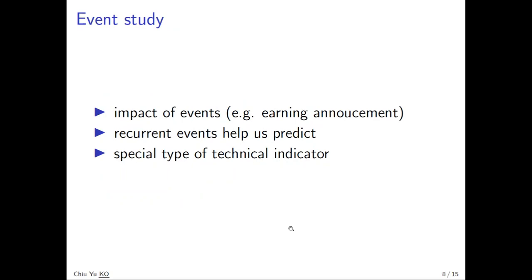The last method we cover for asset pricing is event study. It is a method to study the impact of events on the stock market, such as earnings announcements, interest announcements, product announcements, or natural disasters like earthquakes and air crashes, and how they impact the stock market or related stocks. Why is it interesting? Because those events can be recurrent, and when they repeat in a similar manner, it helps us understand how the price is moving, and then we learn how to predict the future when a similar event happens. One can consider this a special type of technical indicator.